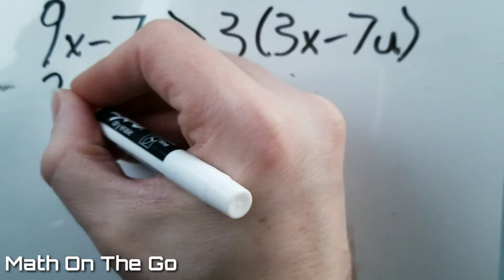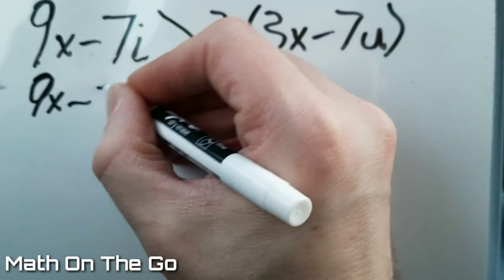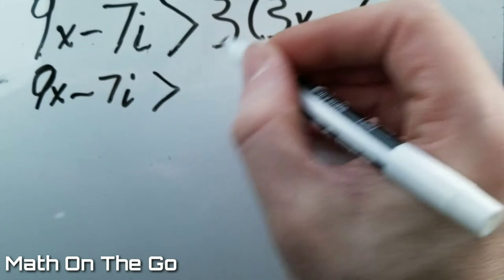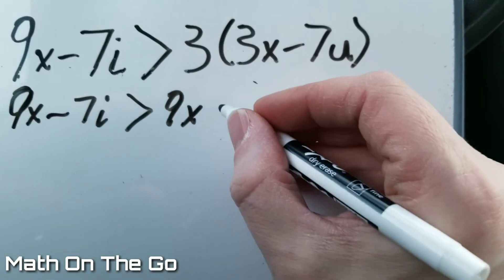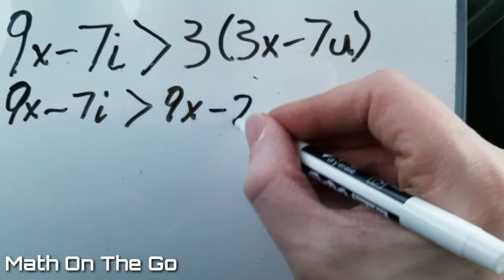So we'll bring down the left hand side. 9x minus 7i is greater than 3 times 3 is 9x. 3 times a negative 7u would give us negative 21u.